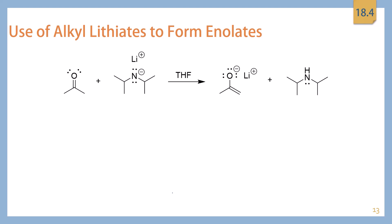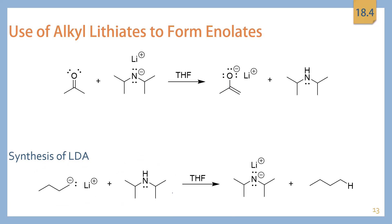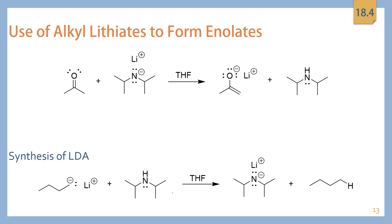LDA is not particularly stable on its own because it's such a strong base, so it typically is synthesized either in situ or synthesized and then immediately used. LDA can be made by reacting diisopropylamine with n-butyllithium — you deprotonate the amine and end up with LDA and butane. This reaction is favored because the pKa of n-butyllithium is 50, while the pKa of the amine hydrogen is 38, pushing the reaction entirely in that direction.